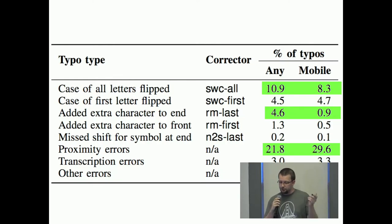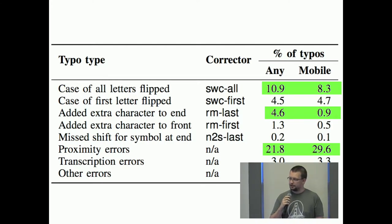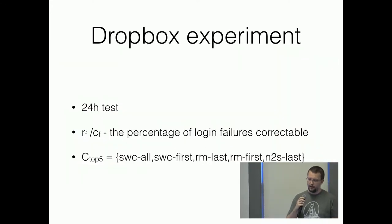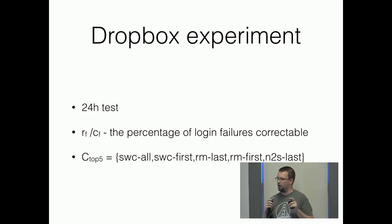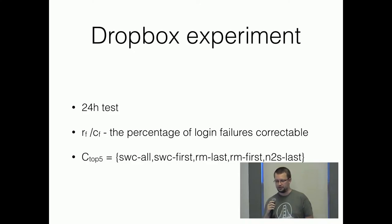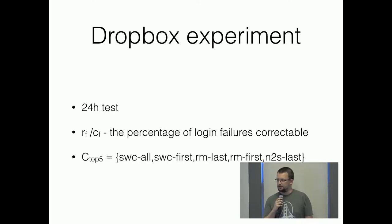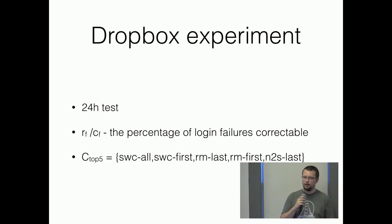After collecting all that information, they named the most popular correctors that they would use in later metrics. They then made a real experiment: they tested what kind of typos in passwords people make when logging into Dropbox. It was not affecting any user and not correcting any passwords — whenever a user mistyped their password, they were only checking what kind of correction could make the password correct, but the user still got an error. The test ran for 24 hours and they are not releasing information about the number of logins, only the ratio between errors made and how many of those tries they could correct with one of those correctors.